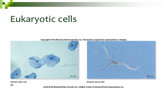Eukaryotic cells are very diverse. For example, on the left we have human skin cells, which we're going to be looking at in lab. On the right we have a nerve cell, and you can see there are lots of projections coming out of it. So they're both eukaryotic cells, but you can definitely see they look very different and have different functions.